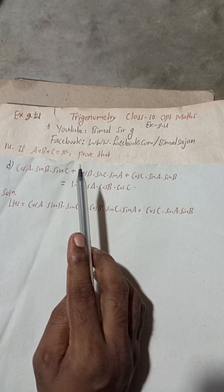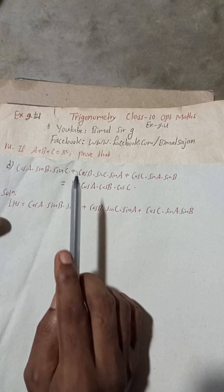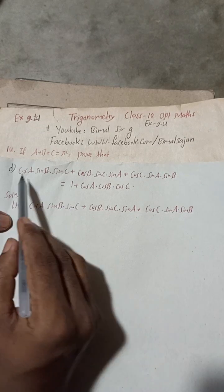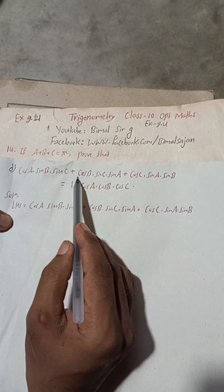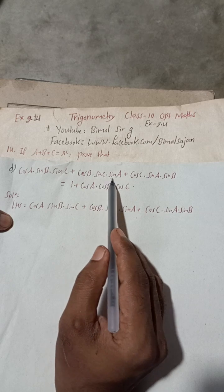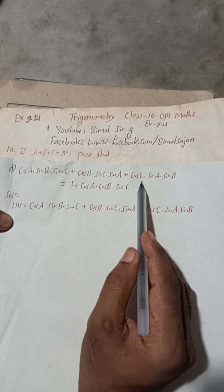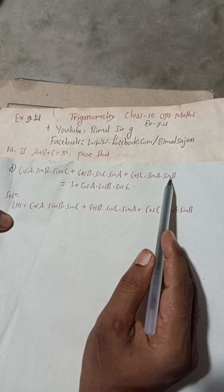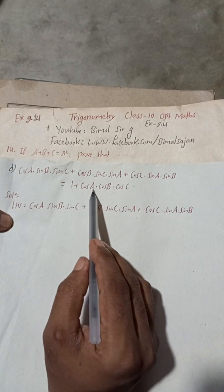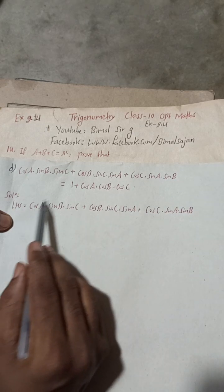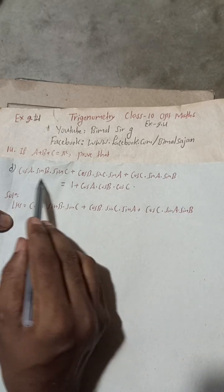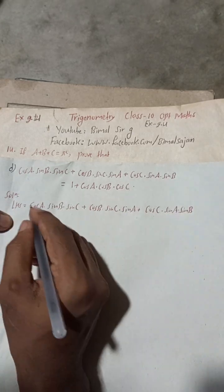This 14D is from Exercise 9.4, Trigonometry, Class 10 Optional Mathematics. Let's begin the solution. We need to prove: cos A·sin B·sin C + cos B·sin C·sin A + cos C·sin A·sin B = 1 + cos A·cos B·cos C.